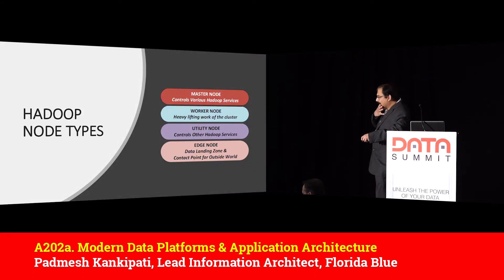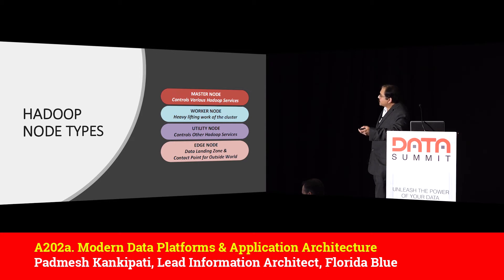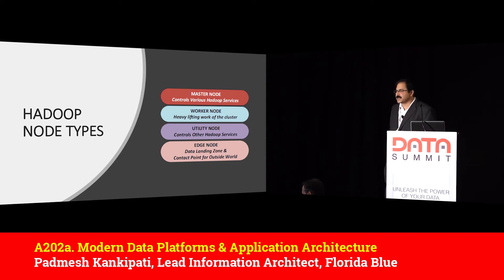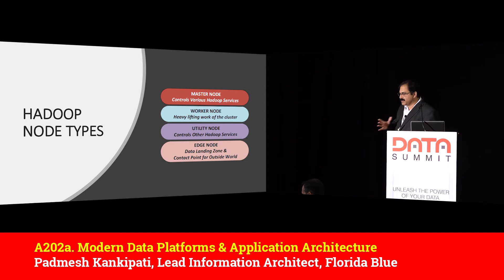Hadoop has four node types: master, worker, utility, and edge nodes. Master nodes control various Hadoop services. Worker nodes do the heavy lifting for processing. Utility nodes control other Hadoop services. Edge nodes are mainly used as a data landing zone and the contact point from the outside world — where interactions of the Hadoop system with the outside world happen.